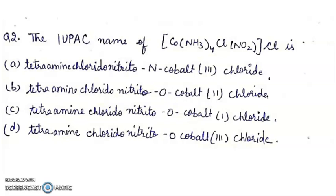Second, the IUPAC name of the given compound Co(NH3)4ClNO2Cl is: Four options are given. We have to find the right answer. The right answer will be A: Tetraamine, Chlorido, Nitrito-N, Cobalt 3-chloride.